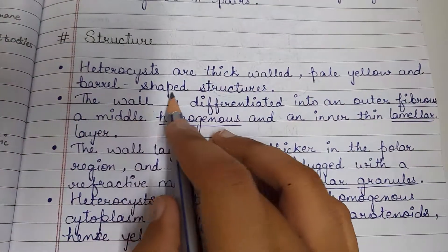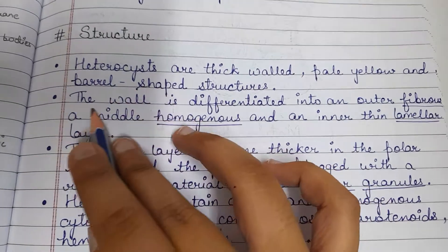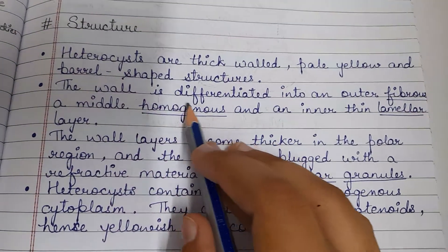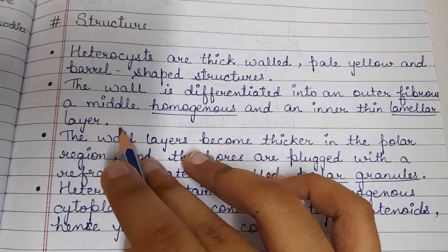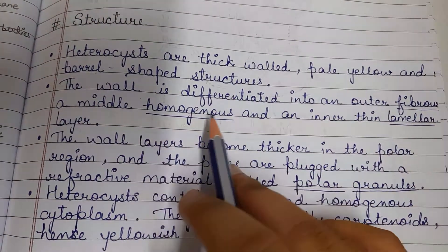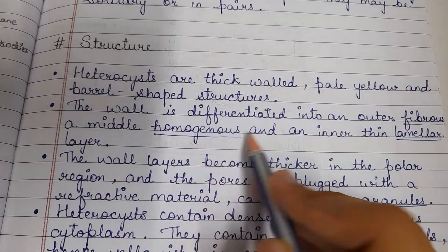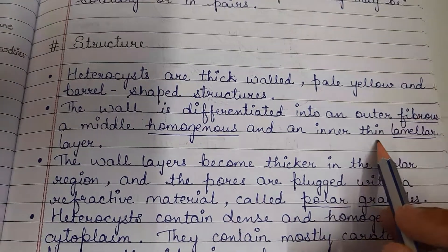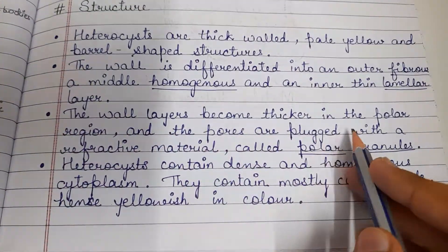Heterocysts are pale yellow colored and barrel-shaped structures — barrel meaning a big round-shaped container. The wall is differentiated into three layers: an outer fibrous layer, a middle homogenous layer, and an inner thin lamellar layer. Lamellar means sheet-like.